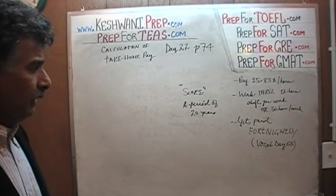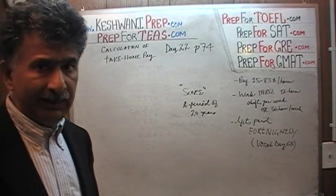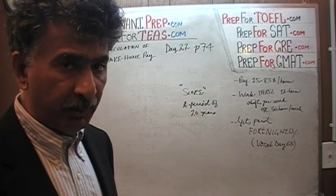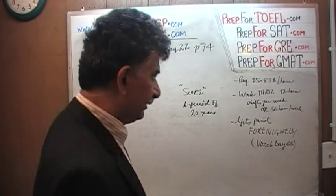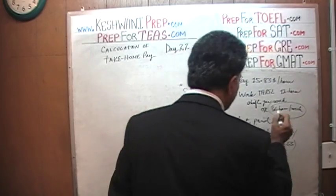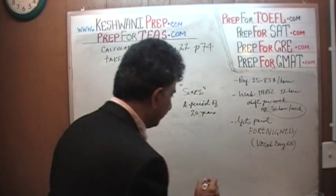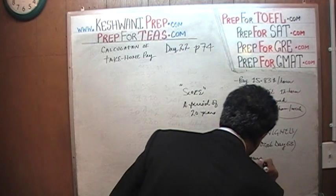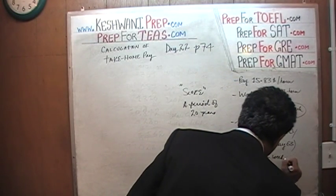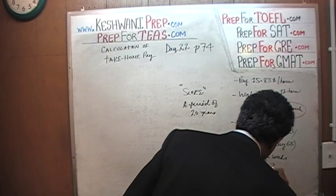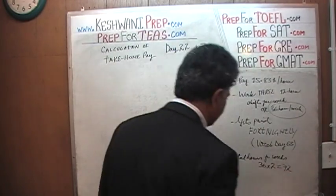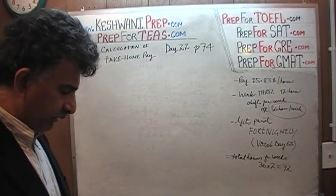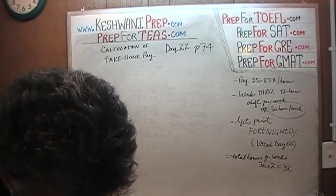Getting back to the problem: since this person gets paid every other week, the total number of hours on the paycheck is not 32 but 72 hours — that's 36 times 2. We have to keep that in mind. Now let's take care of the deductions first, then we'll worry about the gross pay.